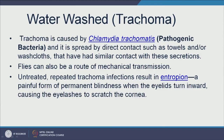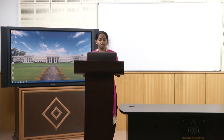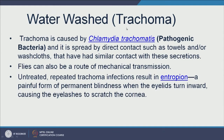First, let us talk about a water-washed disease — trachoma, which is caused by Chlamydia trachomatis. It is a bacteria spread by direct contact such as with contaminated towels, cloths, or any other surface — called fomites — that have secretions containing this bacteria. Flies can also be a route of mechanical transmission. If we do not treat trachoma and get this disease repeatedly, it results in a very painful form of blindness where the eyelids actually roll backwards and rub off the retina. It is very, very painful.